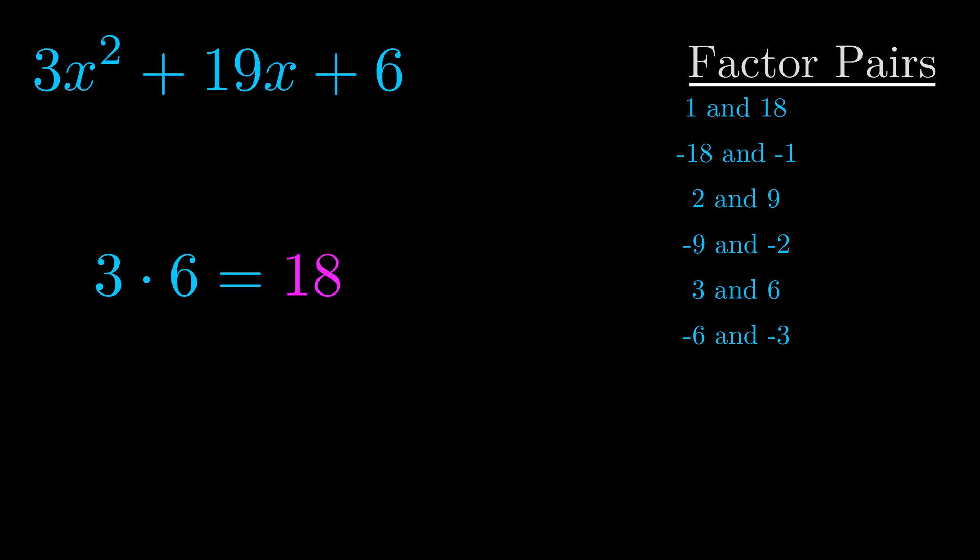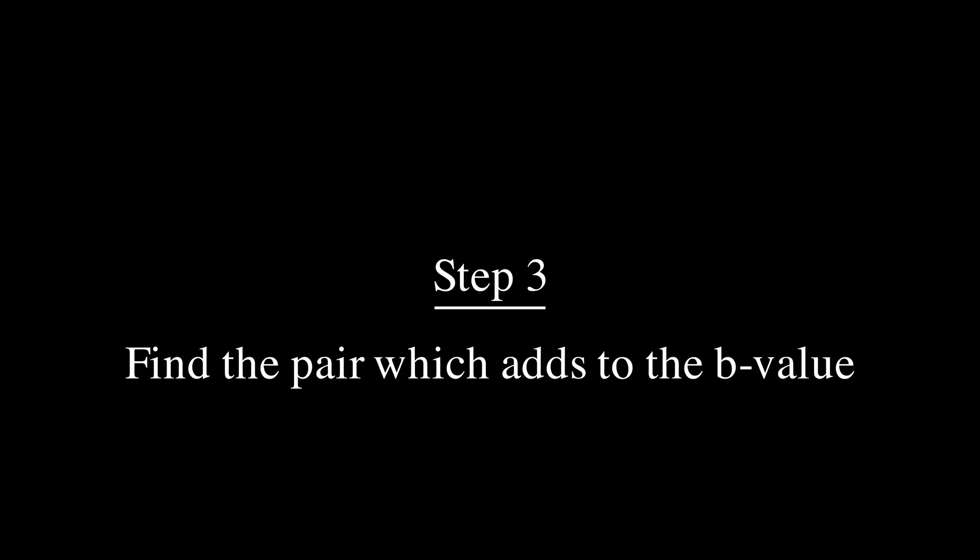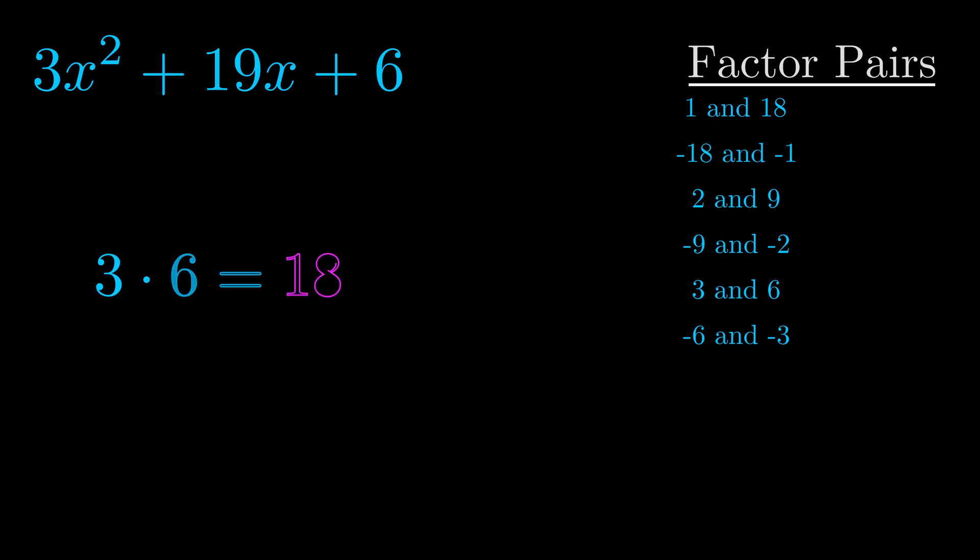Now once you have these factor pairs, the goal is to find which of these pairs adds to the b value. The b value is the coefficient on the x term. That's the middle term, the one that we haven't done anything with yet.